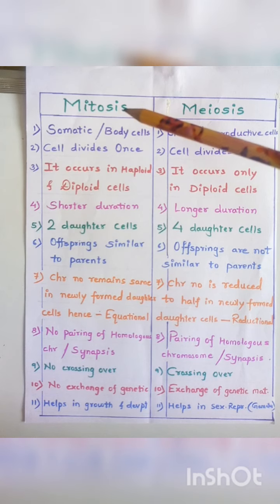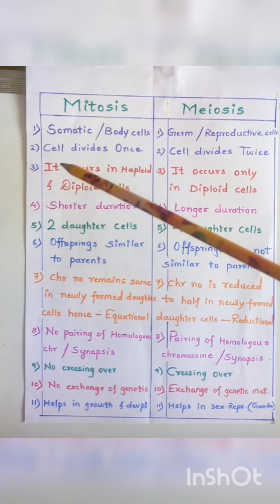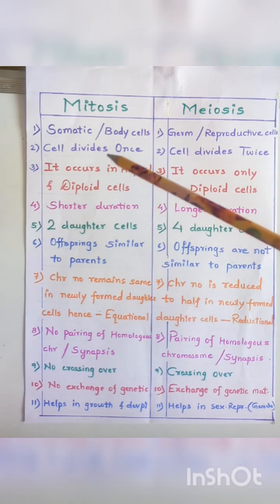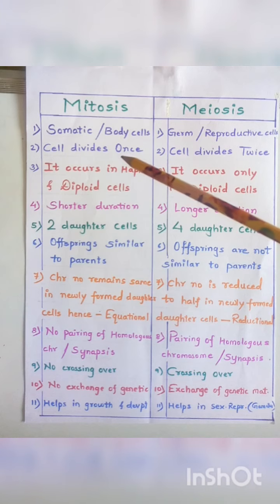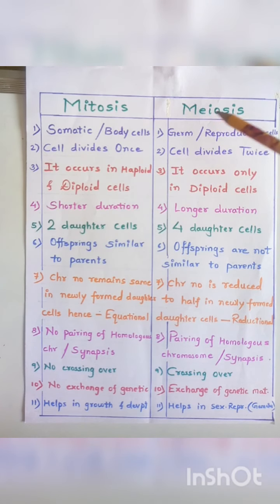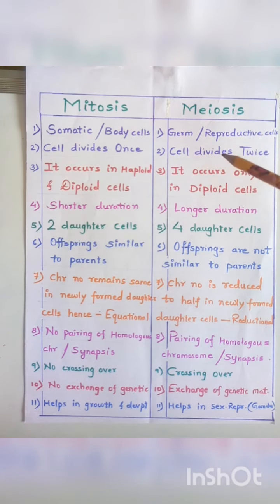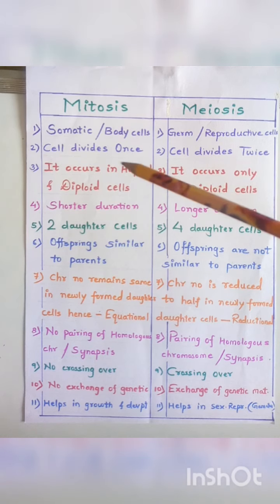Whereas in meiosis the cell divides twice — first the cell will divide and then later on again it will divide. That is, two times the cell divides.